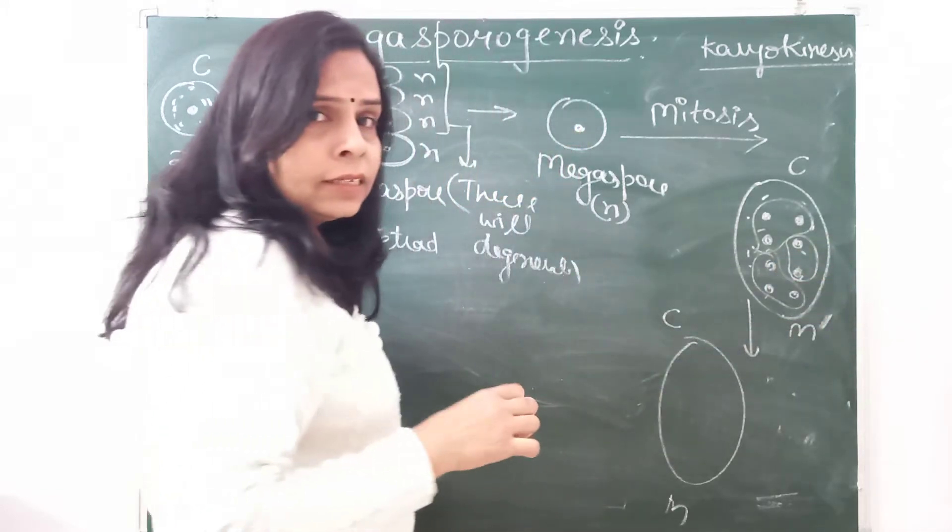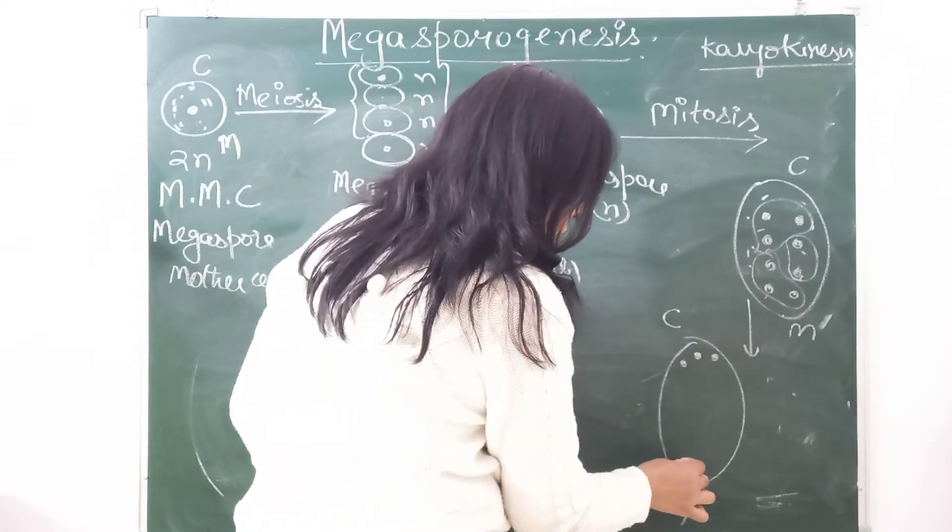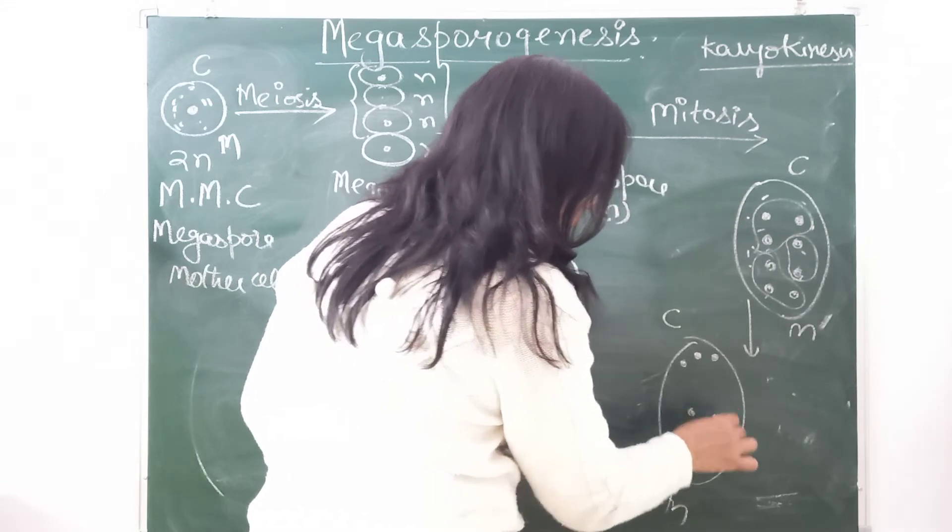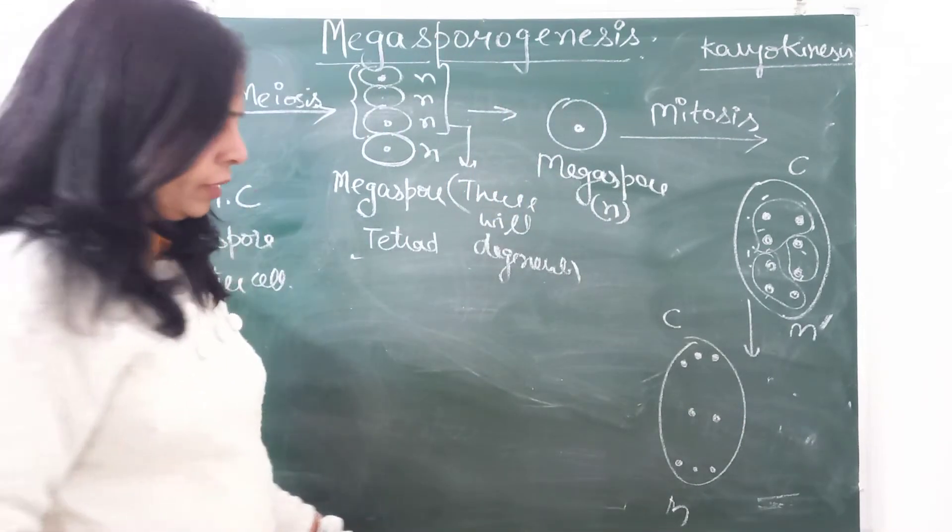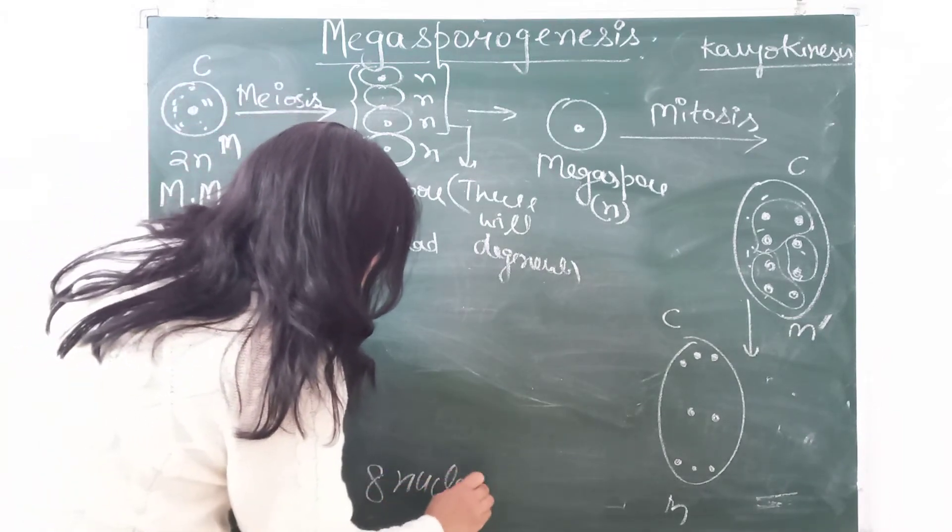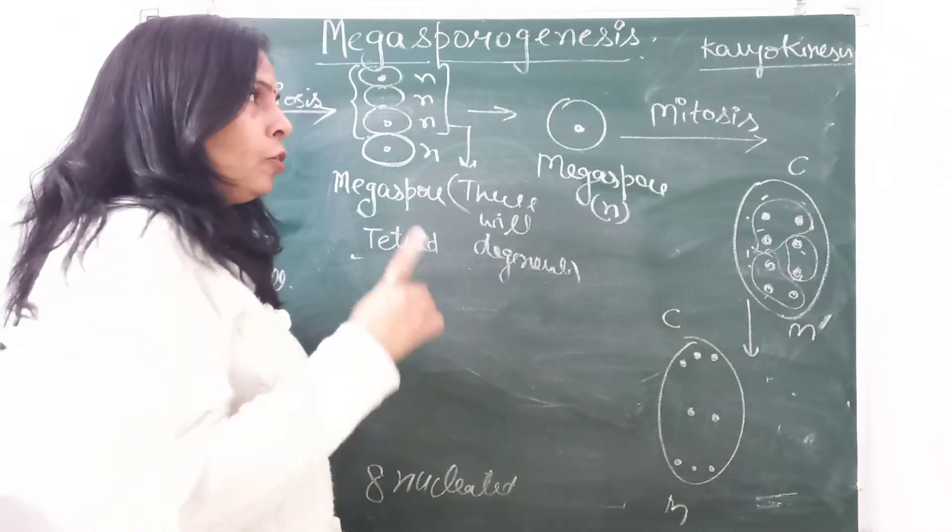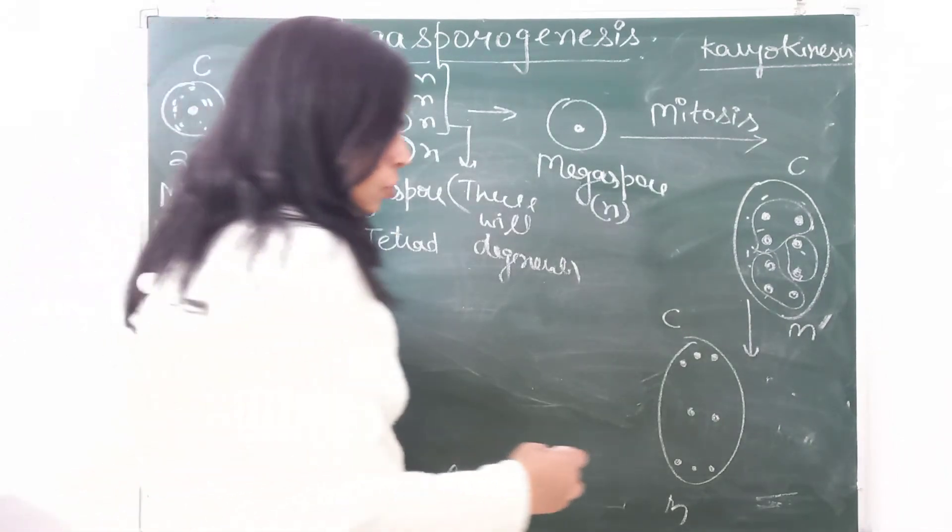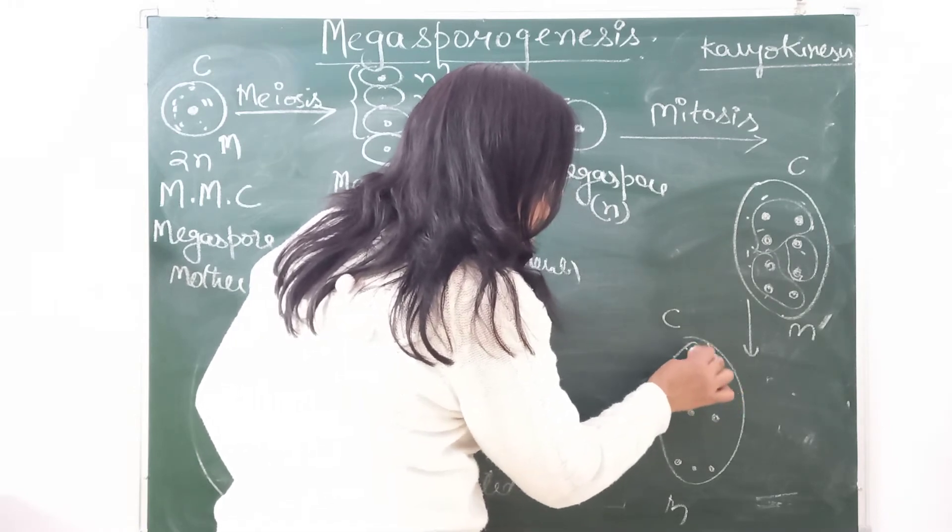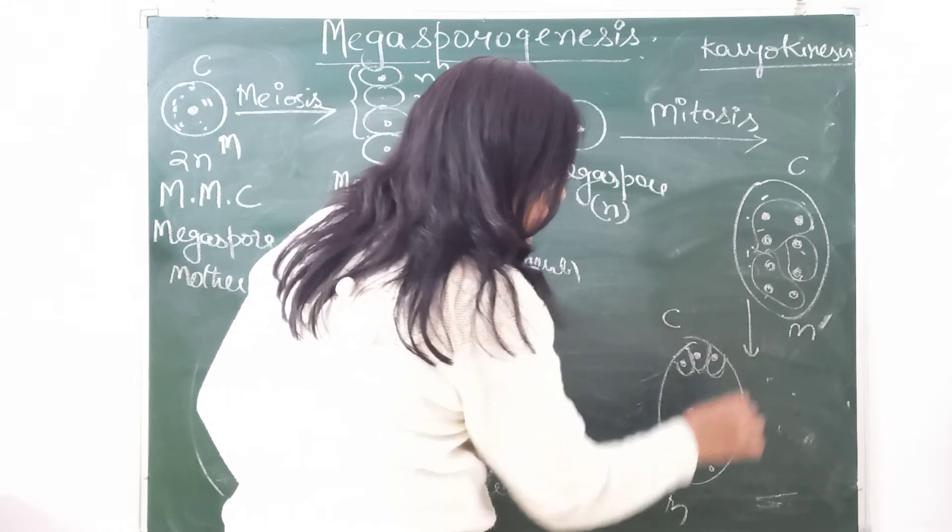So let me draw: one, two, three, four, five, six, seven, and eight nuclei are there. Eight nucleated. Remember it. Let me write here: eight nucleated. After this, what starts happening? Wall starts developing. Cytoplasm division happens and cells start forming.